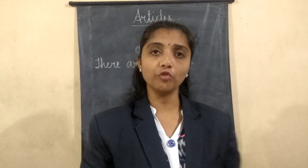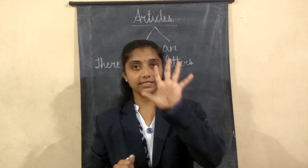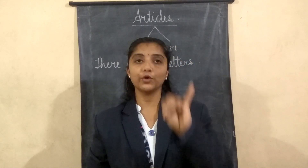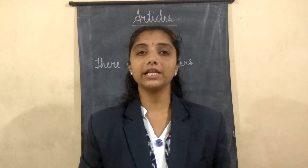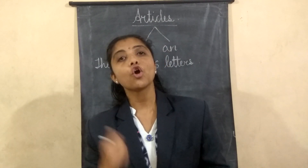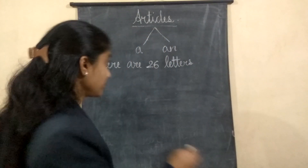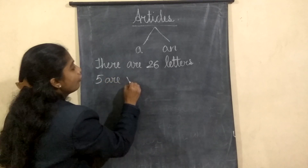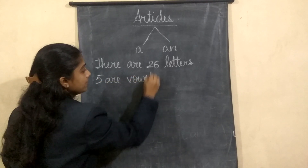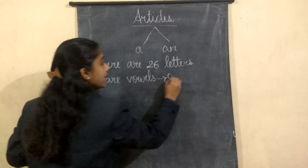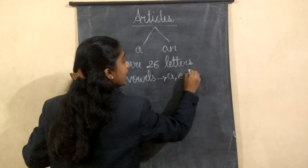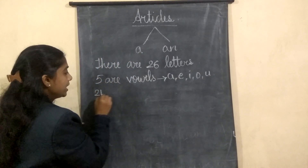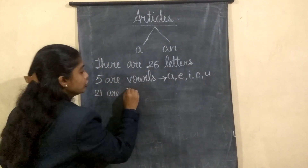Can you tell me how many vowels are there? Yes, there are 5 vowels — that is a, e, i, o, and u. And the rest 21 letters are consonants. So from that, 5 are vowels: a, e, i, o, and u. And 21 are consonants.